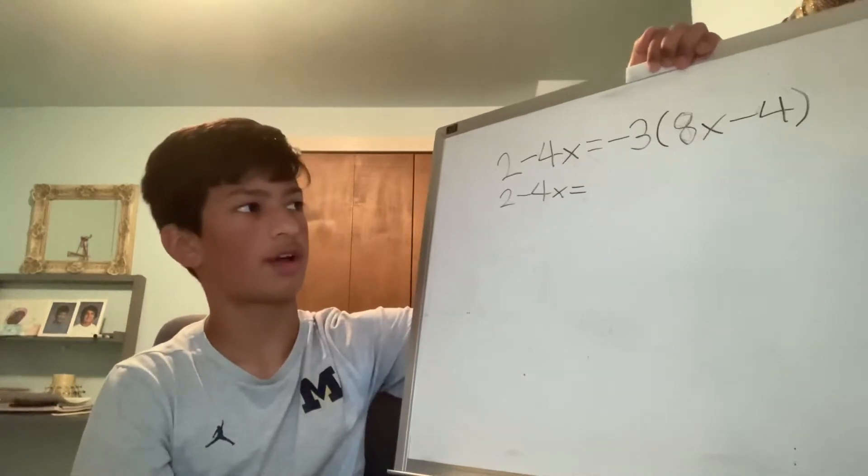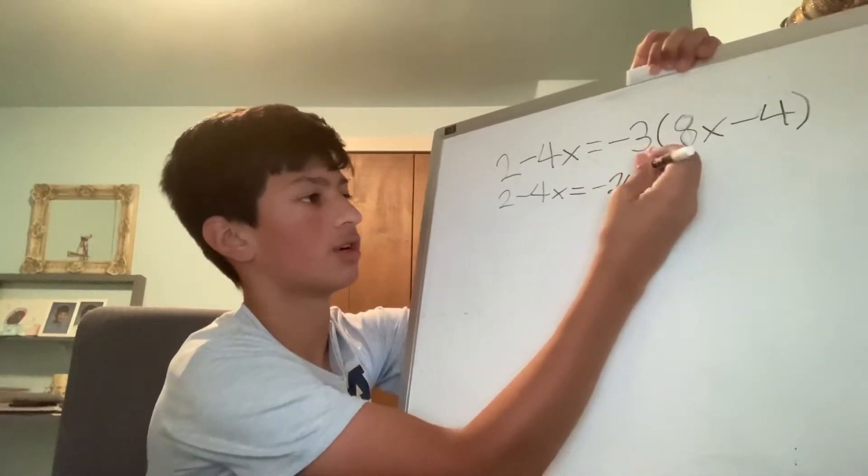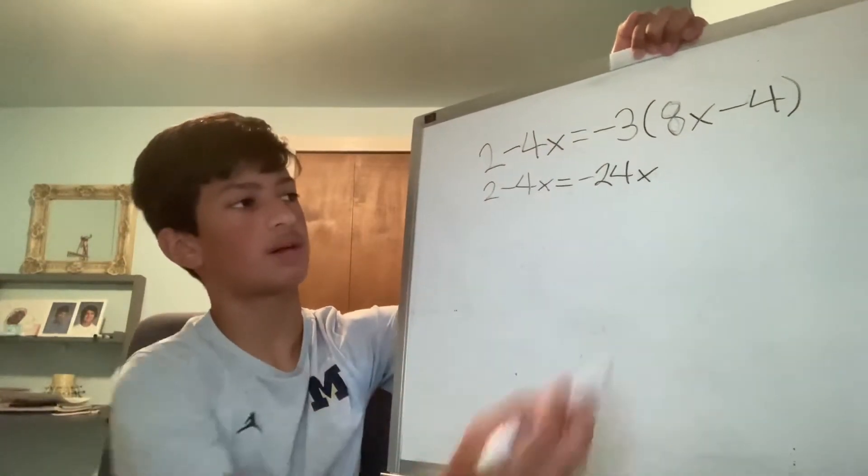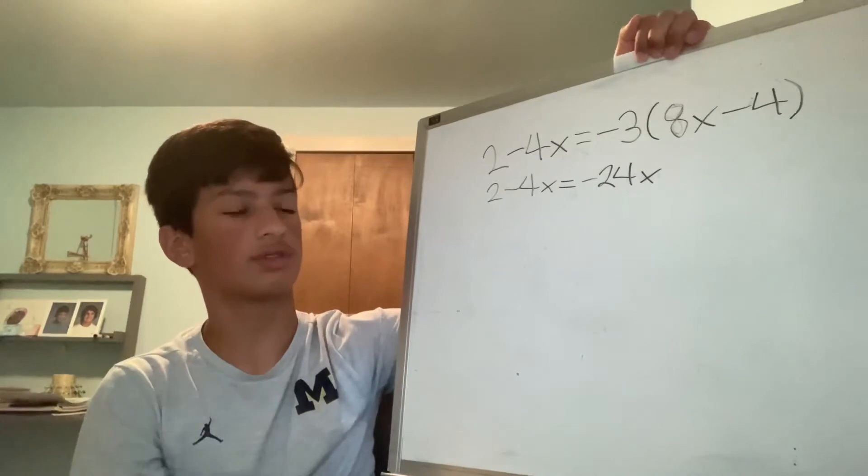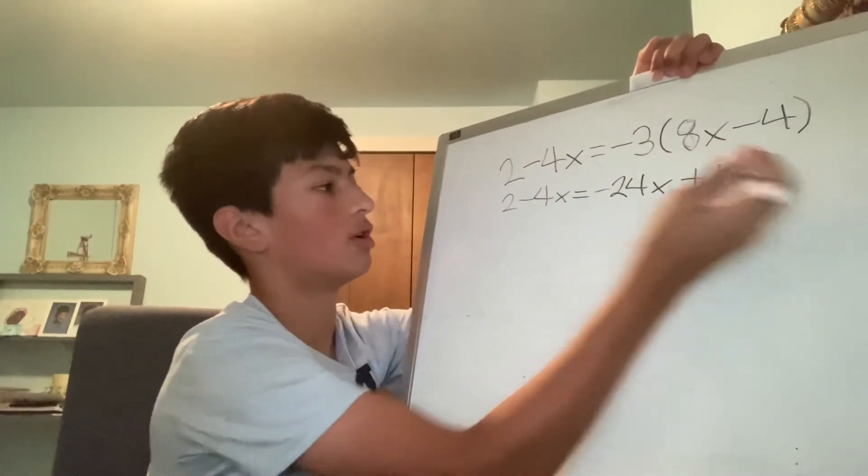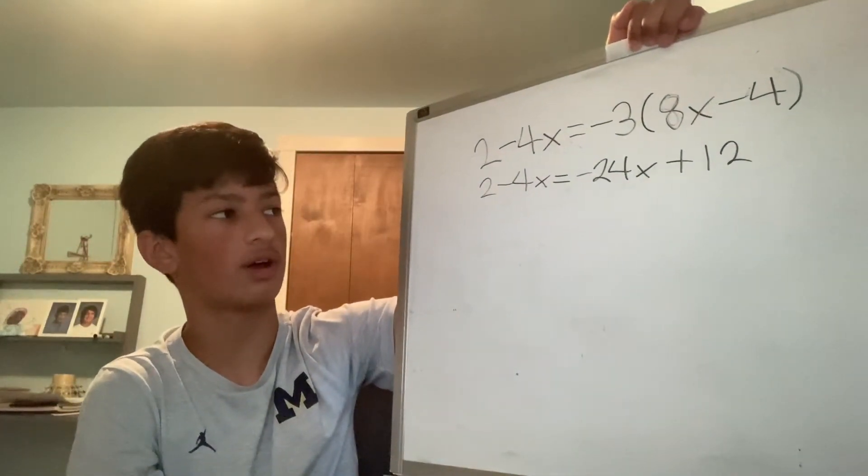so I have to add the variable and I get negative 24x. Negative 3 times negative 4 equals positive 12, so I'm left with 2 minus 4x equals negative 24x plus 12.